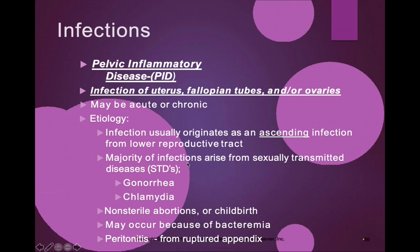The majority of PID infections arise from STDs — it is usually a result of a sexually transmitted disease such as gonorrhea or chlamydia, which we'll discuss in a later lecture. We also see PID in non-sterile abortions or childbirth. It can be a cause of bacteremia and peritonitis.